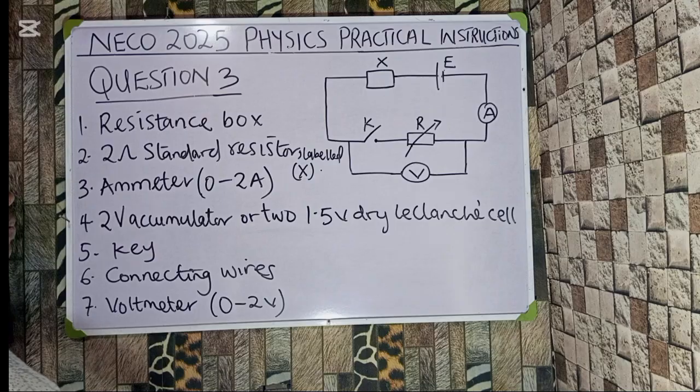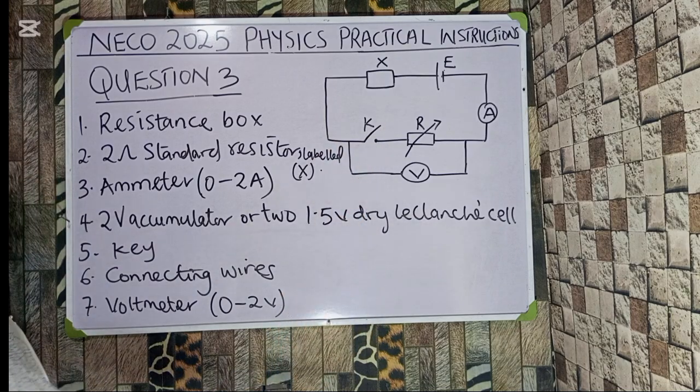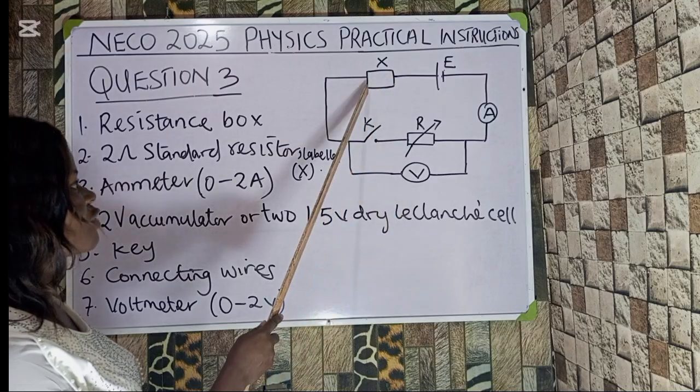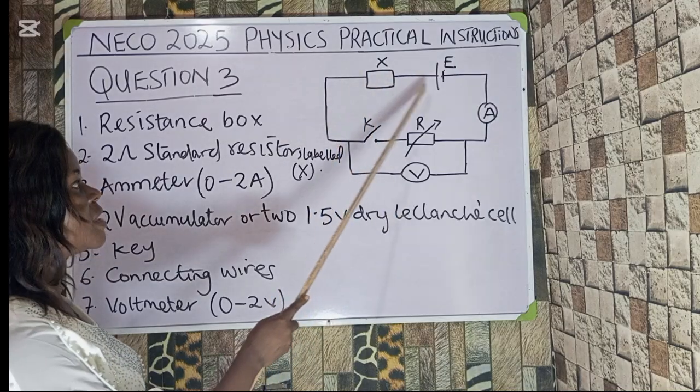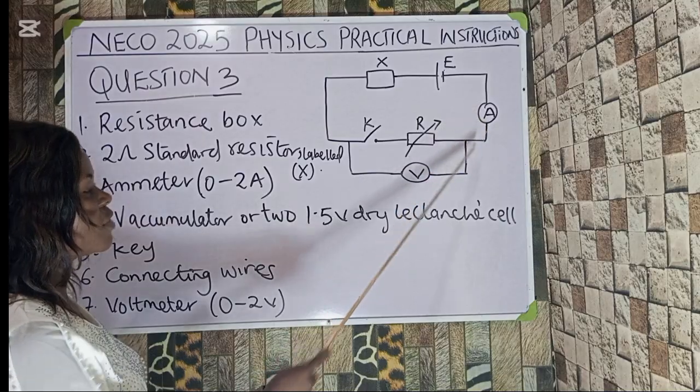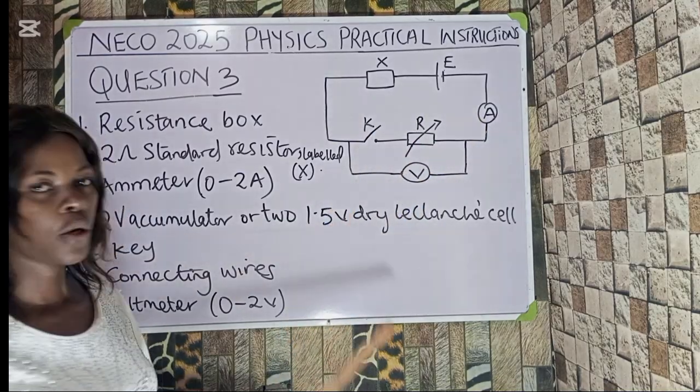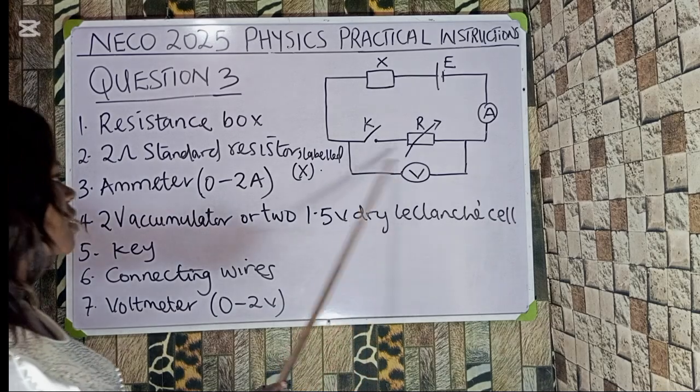For what we have to provide on this question 3, I was able to come up with this. The question can come in this form. Now this is the standard resistor labeled X, this is the cell or the accumulator, this is the ammeter, this is the voltmeter with the rheostat, this is the key. Now looking at this diagram, this is just like Ohm's law.